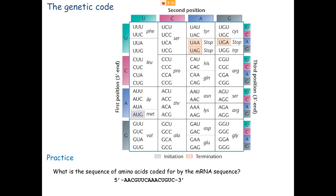Here's the genetic code — the so-called universal one. I don't want you to memorize this code; I want you to memorize some features of the code. It's arranged in a way where the information can be displayed with some advantages, and this particular display allows you to see some patterns I want you to notice.